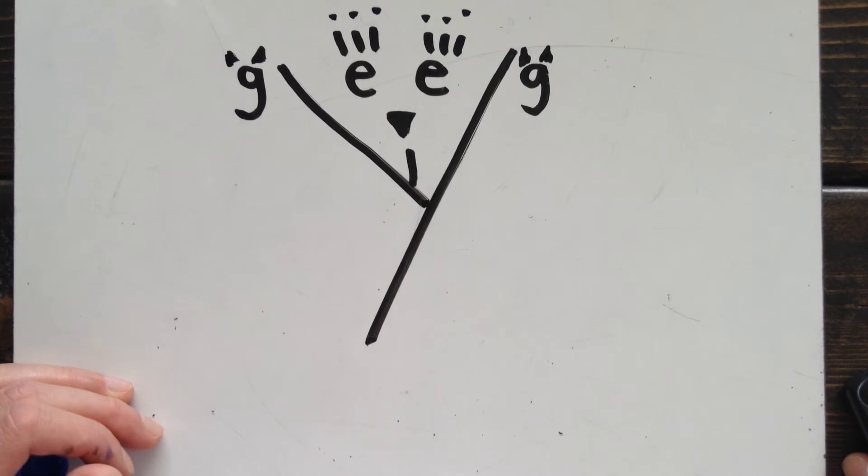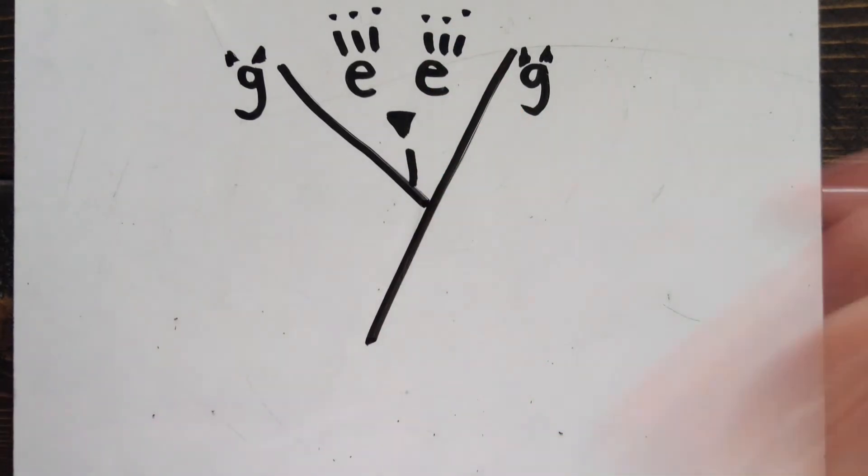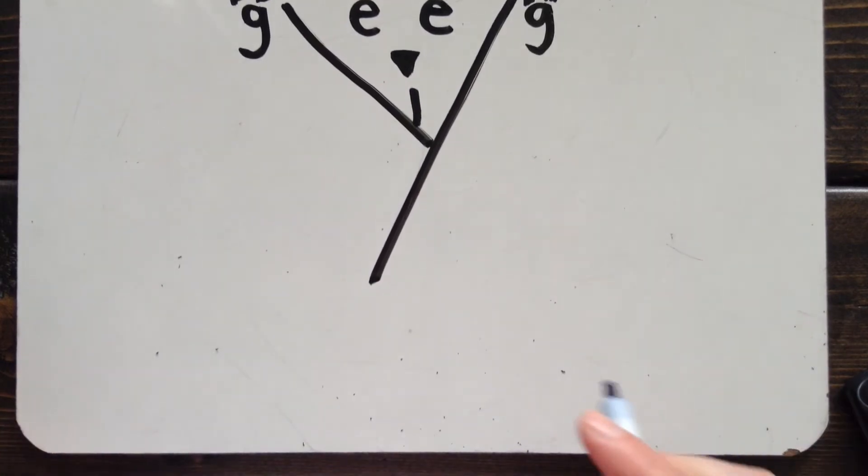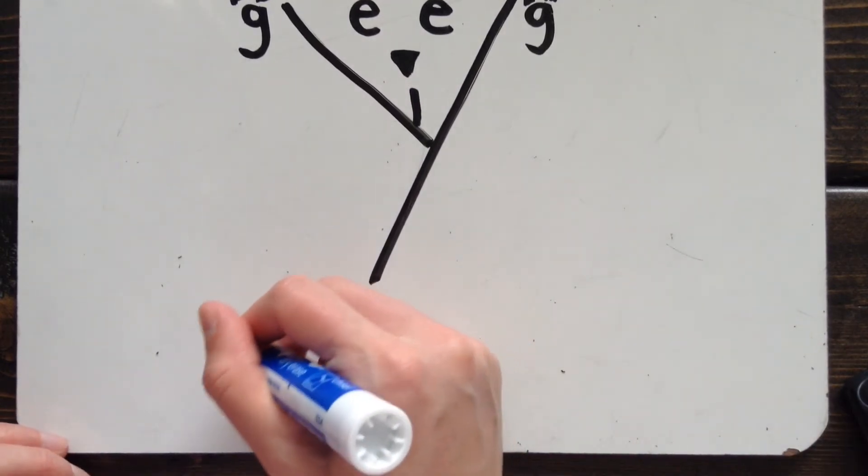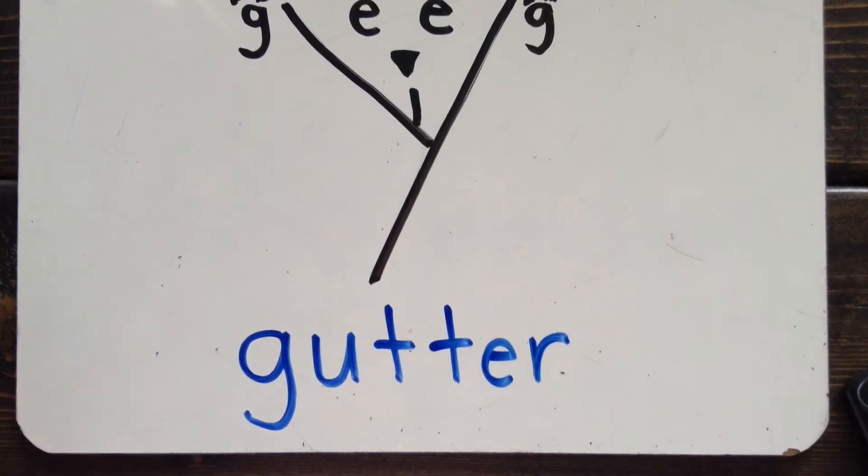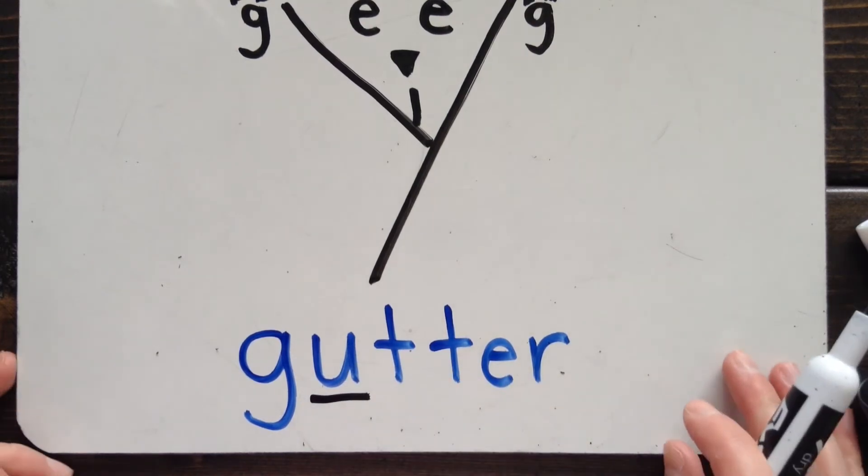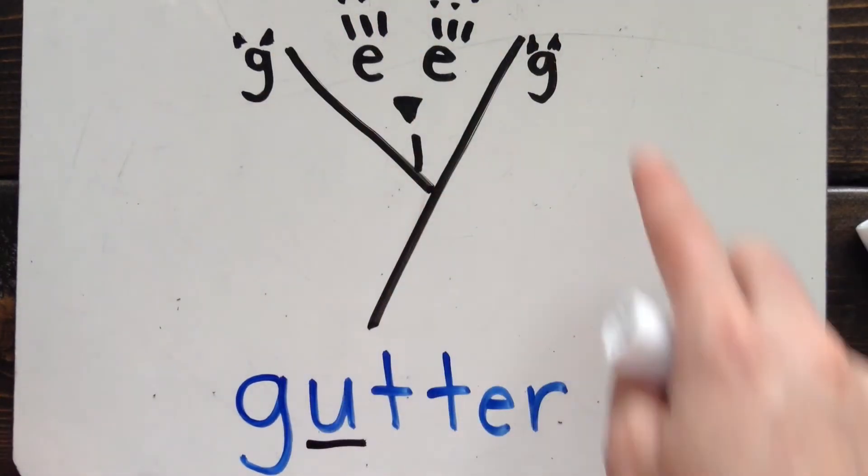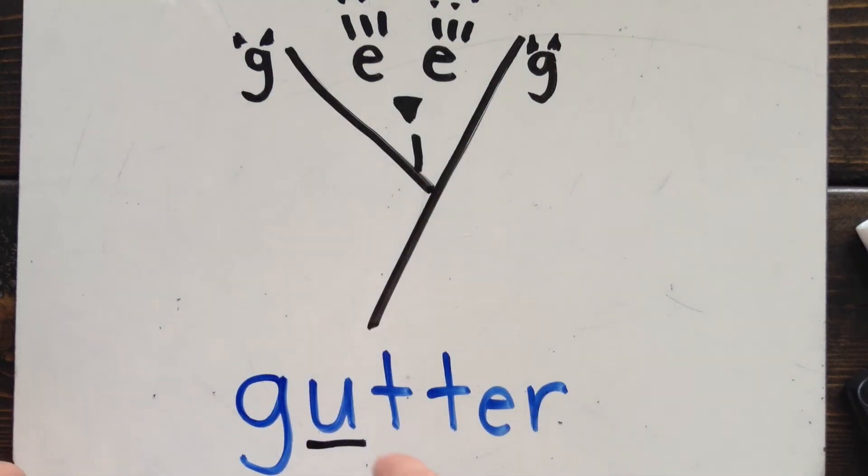What happens if the G is not followed by E, I or Y? What sound will it make then? Well, let's look at an example. This is the word gutter. I know that this G says g and not j because when I look at the letter that comes after the G, I notice it is the letter U and U is not in my Gigi Cat picture. That means I will not be putting cat ears on this G. So no j sound. Instead, it will make the g sound. Gutter.